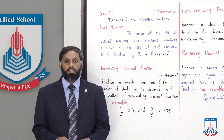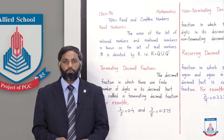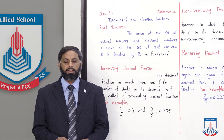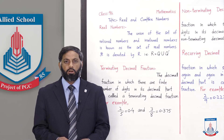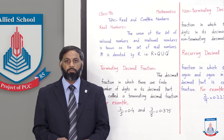Rational numbers ایسے numbers ہوتے ہیں جن کو p over q کی form میں لکھا جا سکے، جہاں p اور q دونوں integers سے belong کرتے ہیں اور q zero کے equal نہیں ہے۔ یہ condition ضروری ہے — اگر denominator میں 0 آ جائے تو mathematics میں undefined case بن جاتا ہے۔